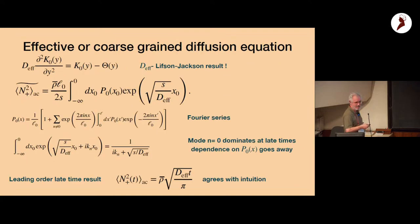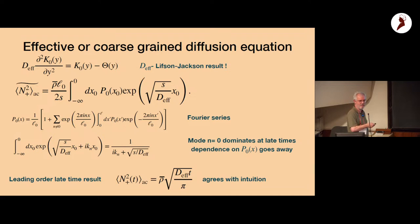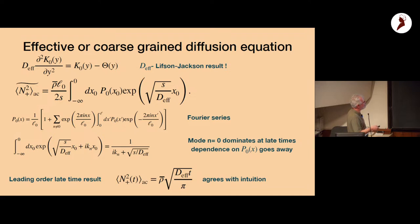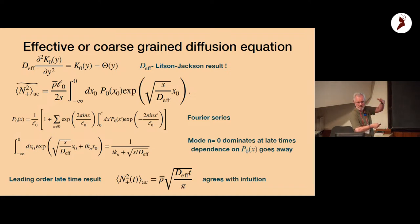After doing the algebra — which is actually quicker than the other methods — you find an effective coarse-grained diffusion equation for k₀, and you recover exactly the Lifshitz-Jackson formula. For the annealed average of N⁺², in Laplace space you integrate over the initial distribution on the left. As s → 0 you're integrating over something not varying within each unit cell, so it integrates to one per unit cell and the dependence on the initial distribution disappears.